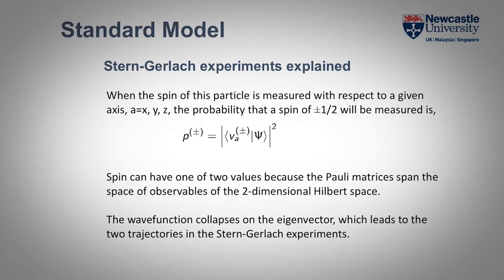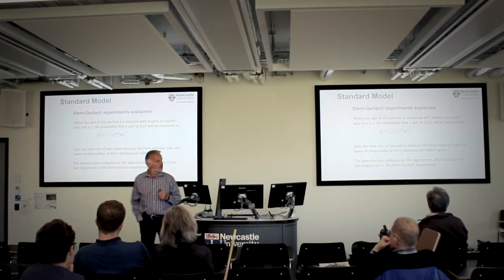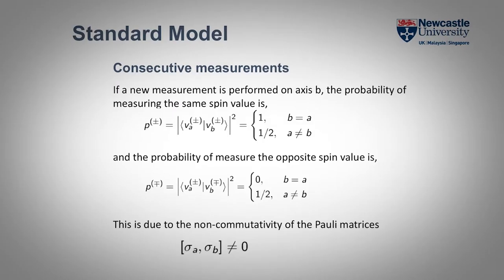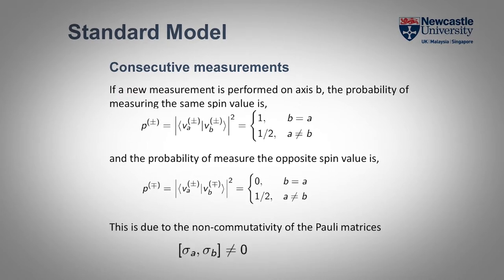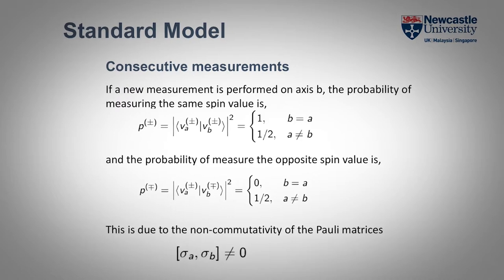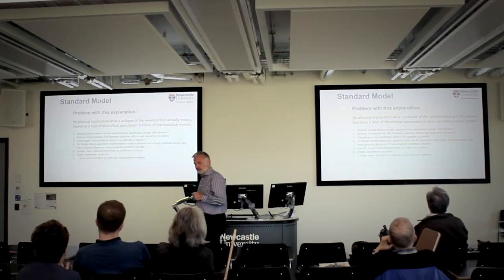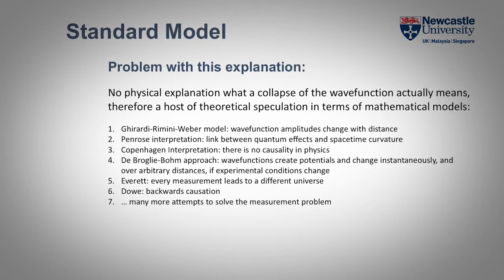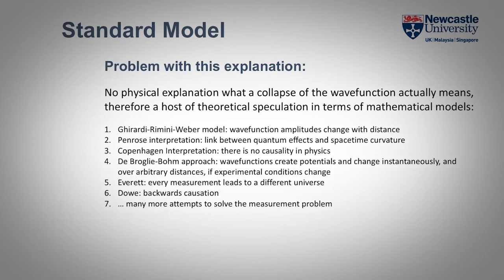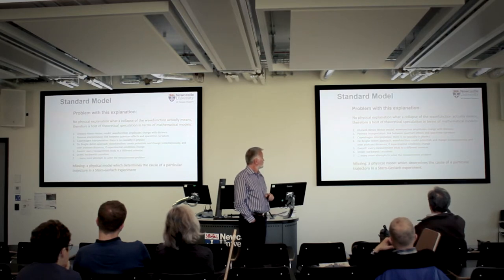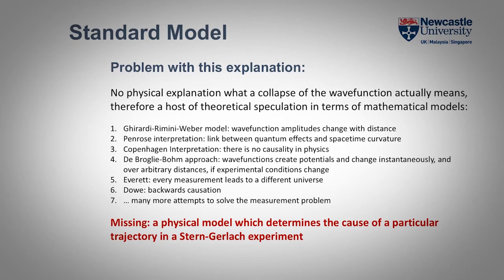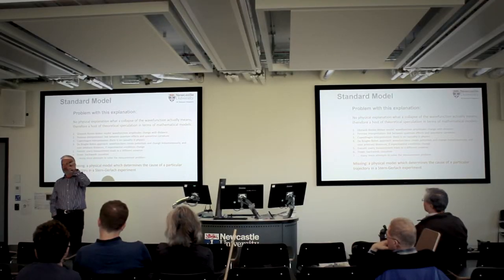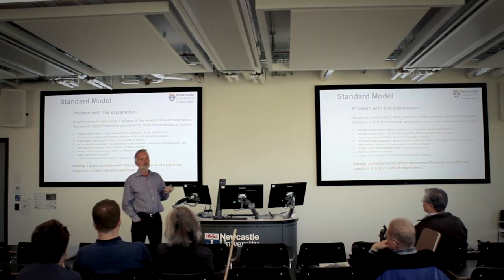There's a problem with this explanation: there's no physical explanation of what collapse of a wave function actually means. There's a host of theoretical speculations going back 60 to 70 years trying to answer this problem. There was no physical model which determines what happens in these experiments. You cannot give a timeline to the experiments in this framework, because you create your experimental results from the mathematics.